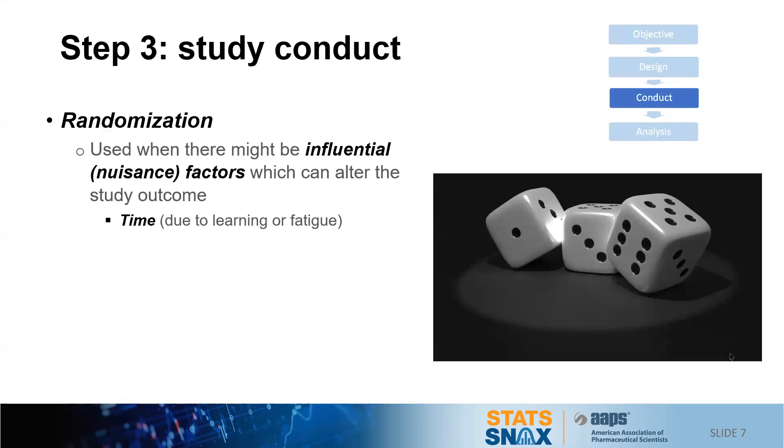Study conduct might concentrate initially or mainly upon tools like randomization. This is used when there might be influential, sometimes called nuisance factors, which can alter the study outcome. For instance, time may be a factor that we'd like to randomize over because during experimentation there may be a learning curve or fatigue might set in influencing the results of the experiment. We're possibly aware of or commonly considered is location effects in multi-well plates and cage effects in an in vivo assay, in which case we would randomize across the plate or perhaps between cages. And then finally, we might randomize across operators or some other significant factor, perhaps an assay reagent lot.